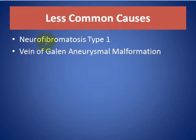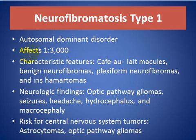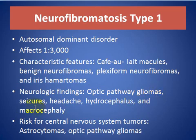Less common causes include neurofibromatosis type 1 and vein of Galen aneurysm. Neurofibromatosis type 1 is an autosomal dominant disorder affecting about 1 in 3,000. Characteristic features include café-au-lait macules, benign neurofibromas, plexiform neurofibromas, and iris hamartomas. Neurological findings include optic pathway glioma, seizures, headache, hydrocephalus, and macrocephaly. There is also risk for central nervous system tumors such as astrocytoma and optic nerve glioma.